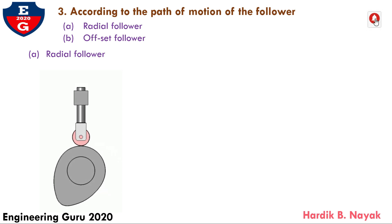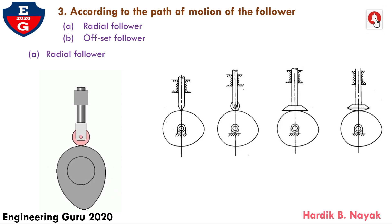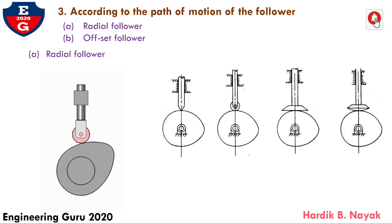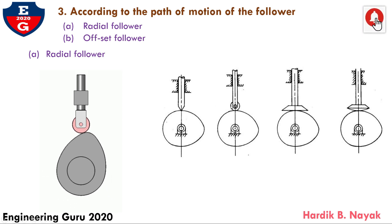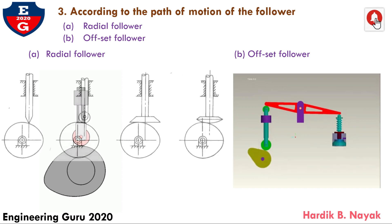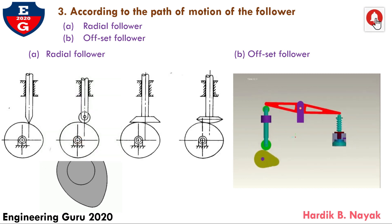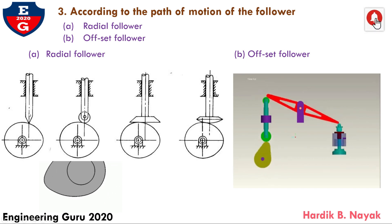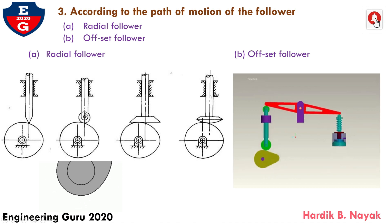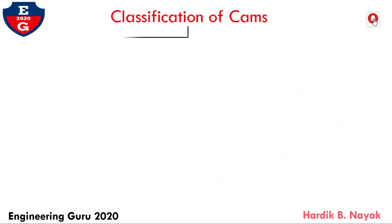Third, according to the path of motion of the follower, there are two types. First, radial follower: when the motion of the follower is along an axis passing through the center of the cam, it is known as radial follower. In this figure, we can see knife-face follower, rolling follower, flat face, and spherical face follower. Second is offset follower: when the motion of the follower is along an axis away from the axis of the cam center, it is called offset follower. Here we can see knife-face follower for offset, rolling follower, flat face, and spherical face.